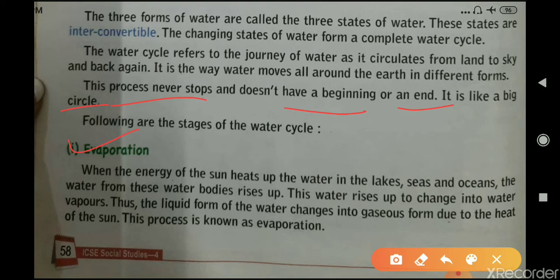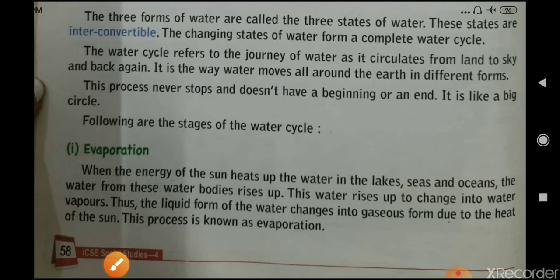The first stage is evaporation. When energy from the sun heats up the water in lakes, seas, and oceans, the water rises up and changes into water vapor. The liquid form of water changes into gaseous form due to the heat of the sun. This process is known as evaporation.